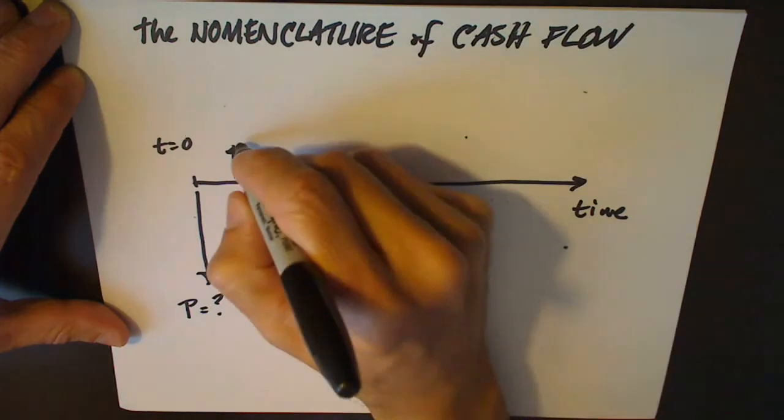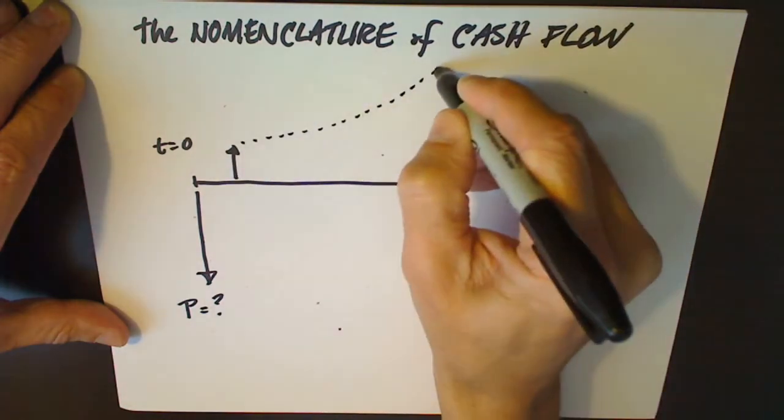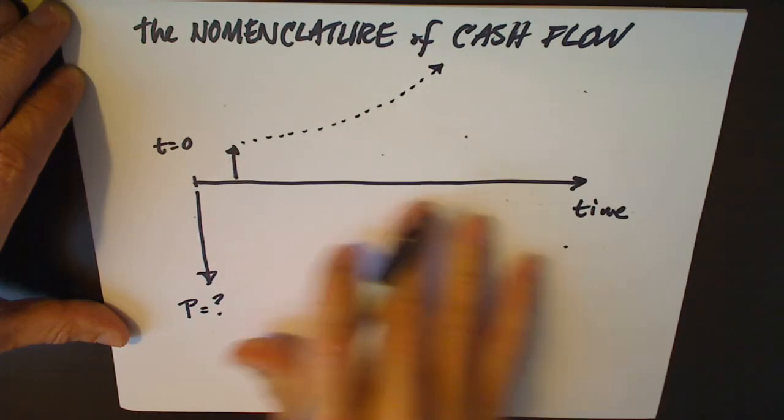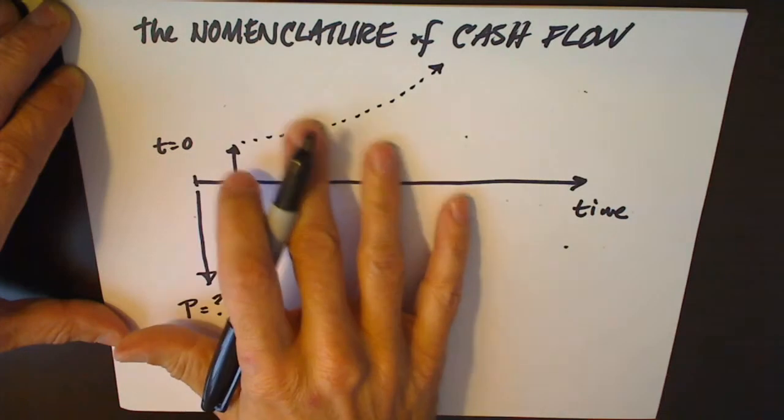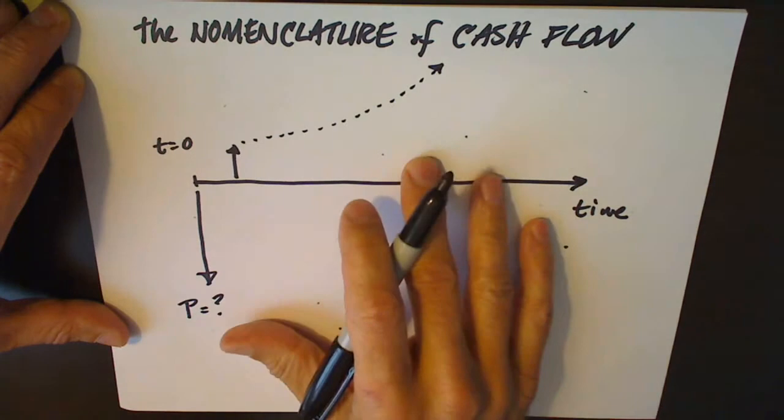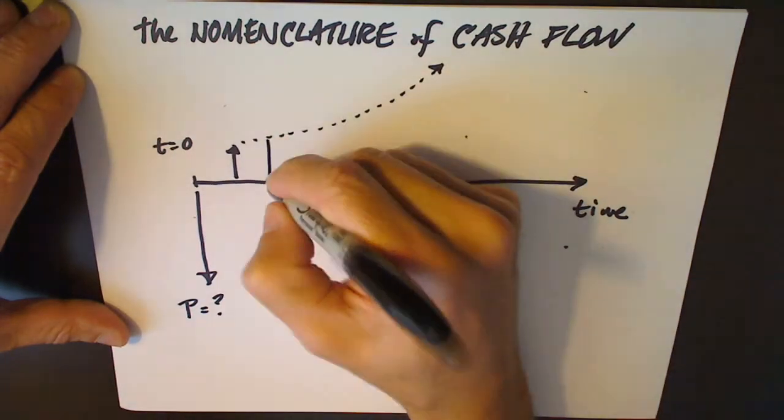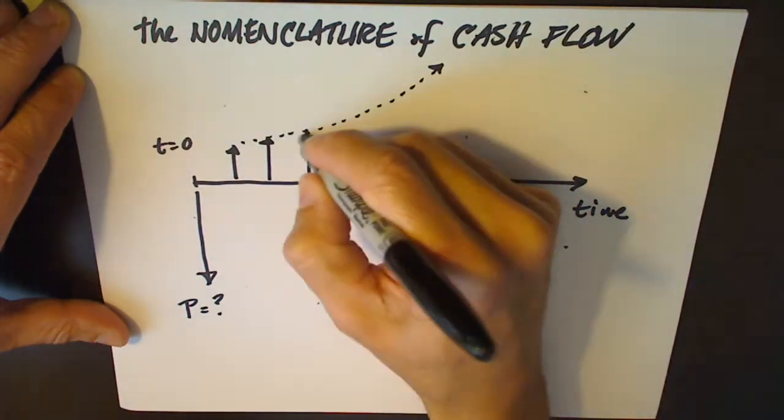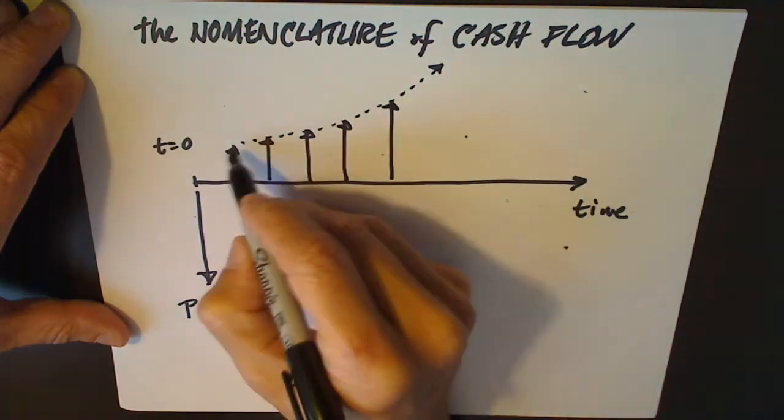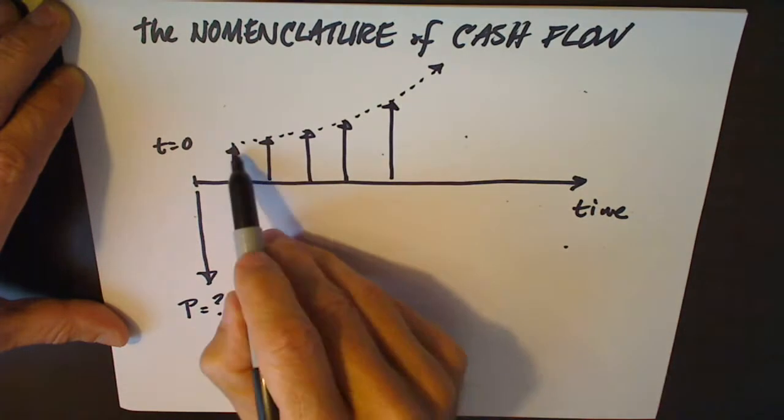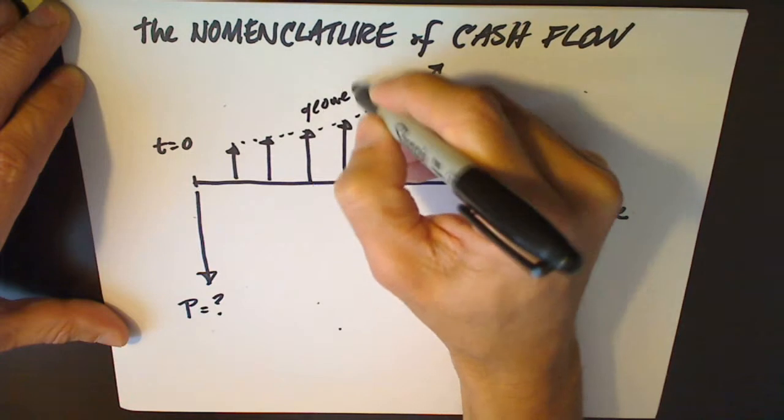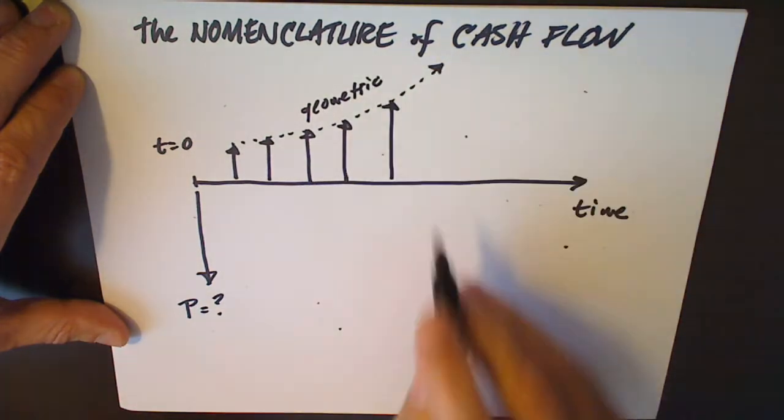Unlike the arithmetic example that we showed earlier where the landlord increased the rent by a constant amount every year, two hundred dollars a month in that case, when we talk about how much should we pay for a company with growing profits, we typically express that growth not arithmetically as if it were a straight line, but geometrically. This gets confusing because there are two percentage rates.